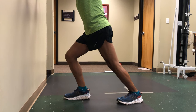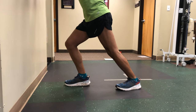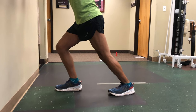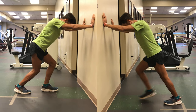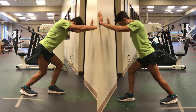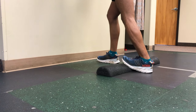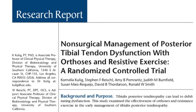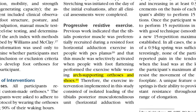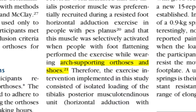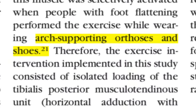Nearly every program for this injury employs a calf stretching regimen. A typical routine is three sets of 30 seconds of standing calf stretch against a wall, both with straight knee and bent knee, done twice a day. You should stretch both sides and use an incline board if it's available to you. A 2009 study by Cornelia Kulig and her colleagues at the University of Southern California emphasizes that you should be wearing your shoes and orthotics while doing these stretches.